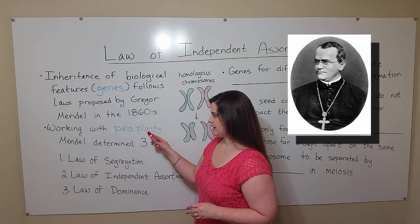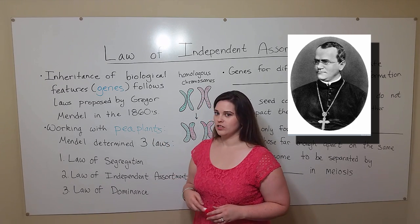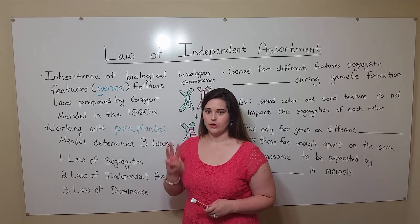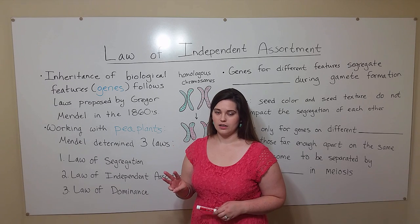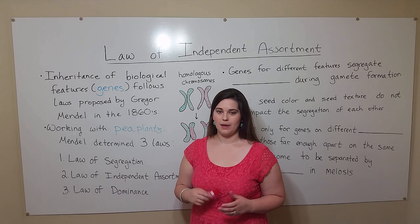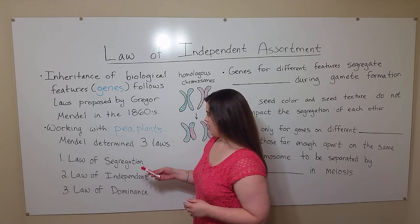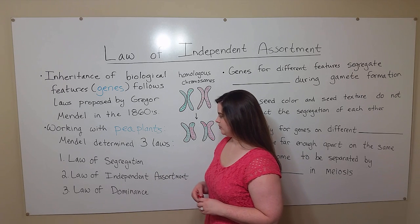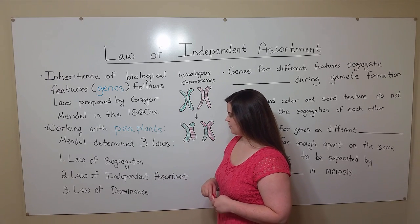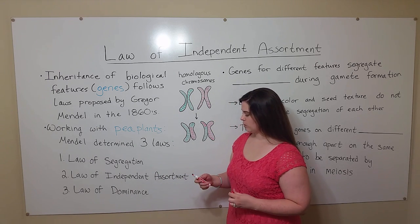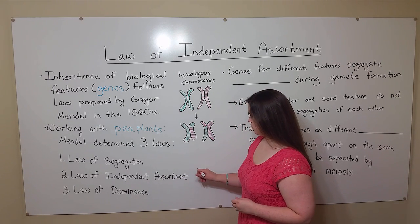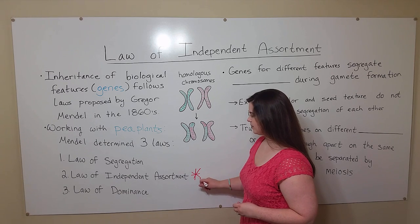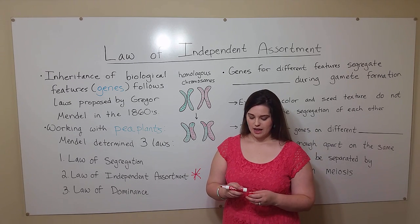Mendel worked with pea plants, and in working with pea plants, he determined three laws regarding patterns of inheritance. These are the law of segregation, the law of independent assortment, which is what we are talking about today, and the law of dominance.